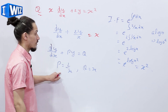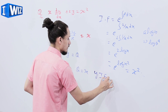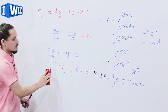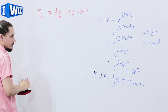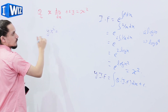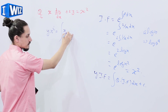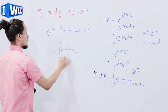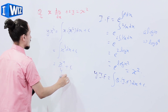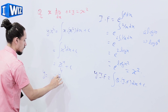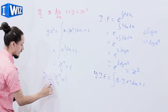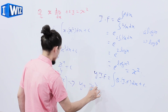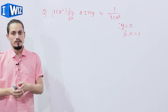Now we have p, q, and the integrating factor. The solution is y·x² = integral of x·x² dx + c = integral of x³ dx + c = x⁴/4 + c. Therefore y = (x⁴/4 + c)·(1/x²), which simplifies to y = x²/4 + c/x².